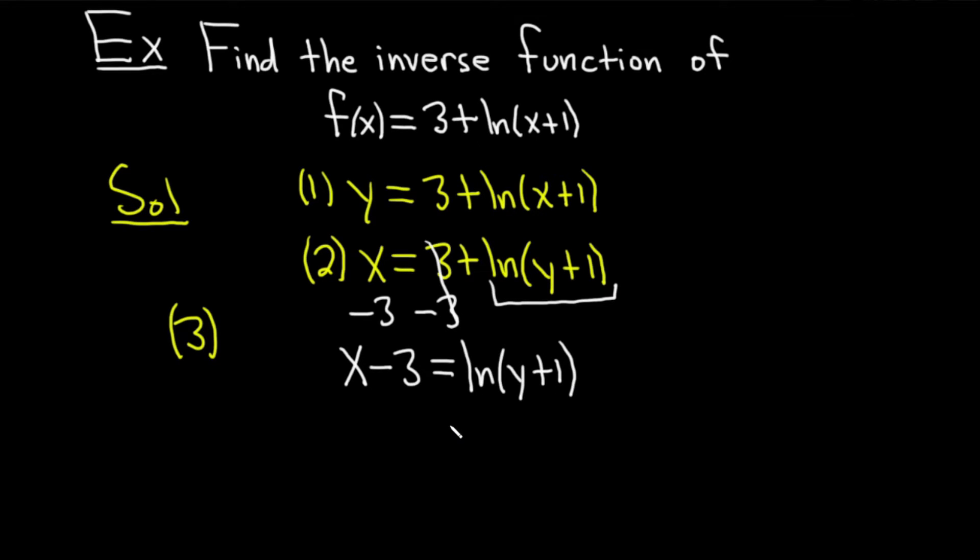And this is the key step. So we have to somehow get rid of the natural log. This is super important, so I'm going to write it on the side. If you have e^(ln(x)), because e^x and ln(x) are inverse functions, they pretty much undo each other. So you just get x.